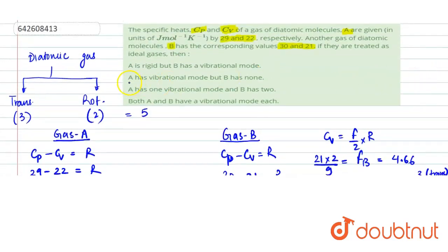Now, we can check gas A has 1 vibrational degree of freedom and B has none, which is given to us in the option B. And other options are not correct as in option A, A is reset. So, if it is reset, that means it will not have any vibrational degree of freedom, which makes it incorrect.